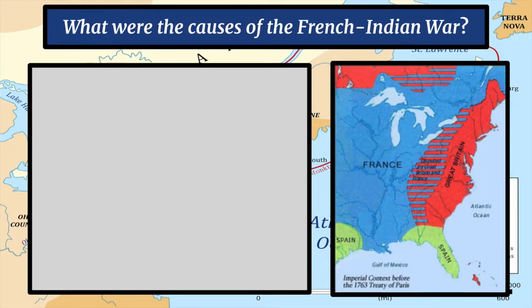Our first left side question today is: what were the causes of the French-Indian War? The French-Indian War is interesting in that it's actually a part of a larger war known as the Seven Years' War, which was fought in many different parts of the world. The French-Indian War is the part of the war that was fought in North America. Remember, we use Great Britain and England kind of interchangeably — England is part of Great Britain, but Great Britain actually includes England, Scotland, Wales, and Ireland.